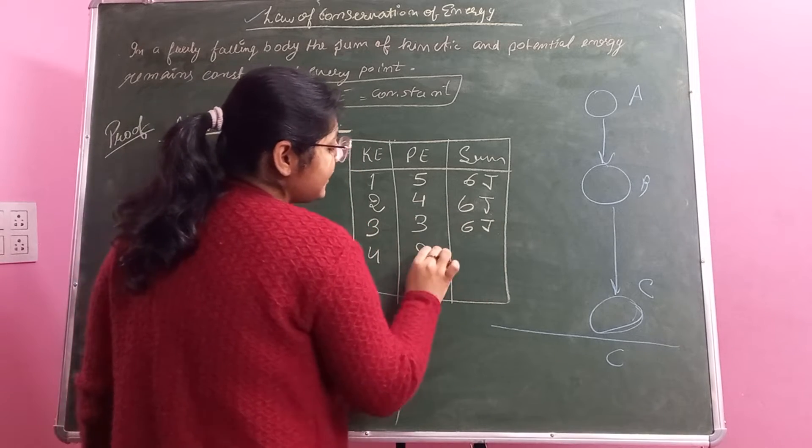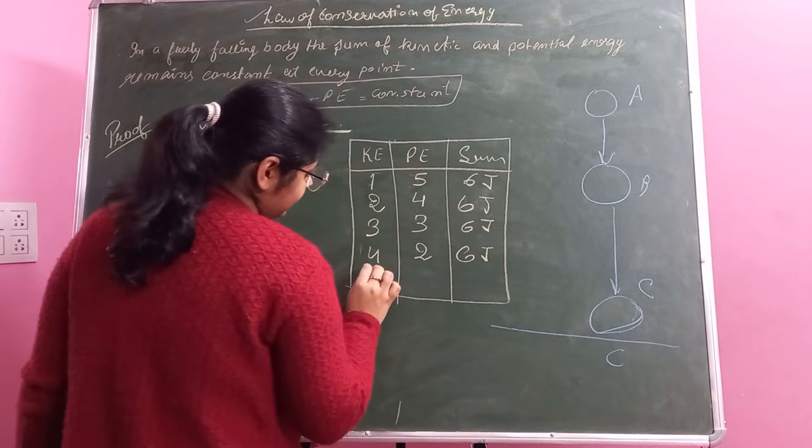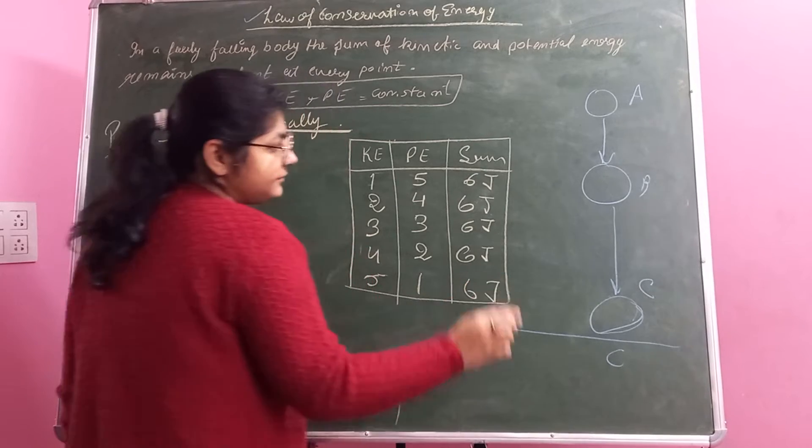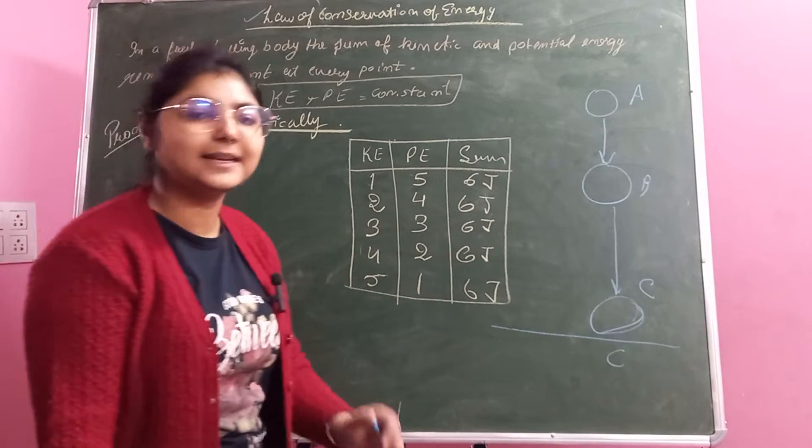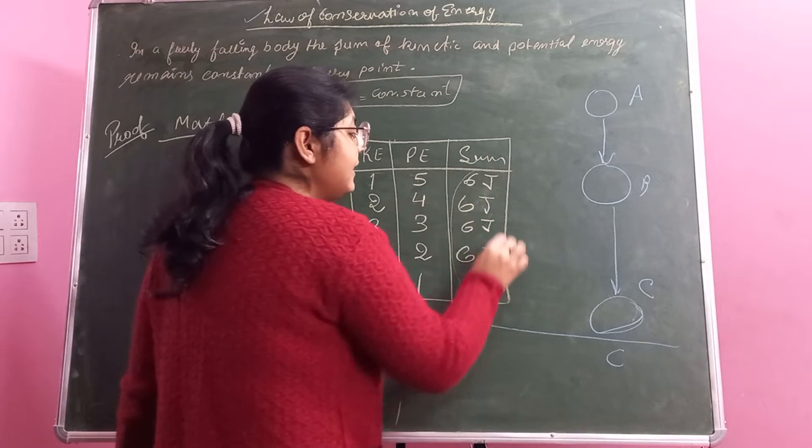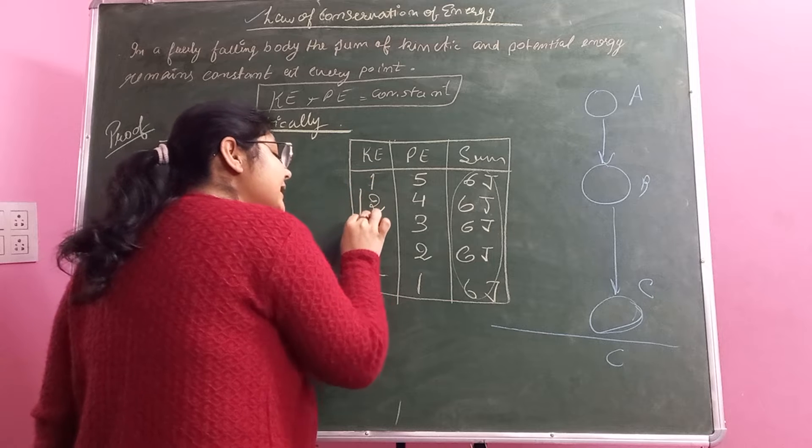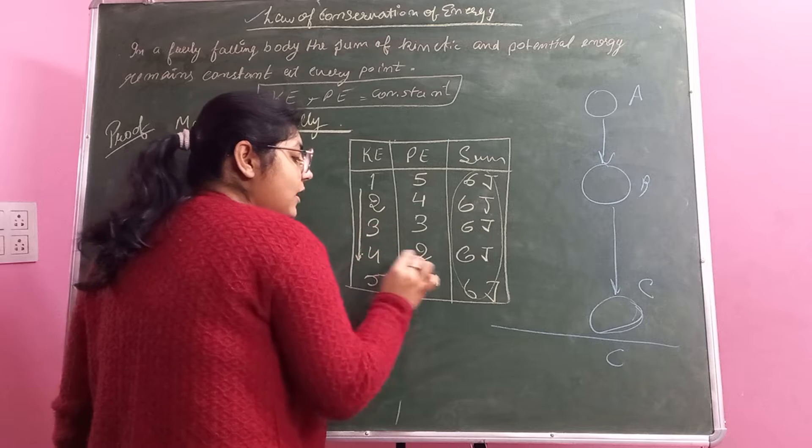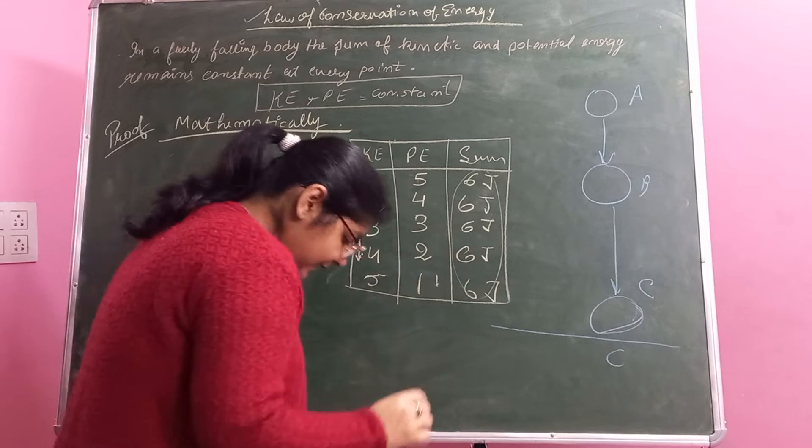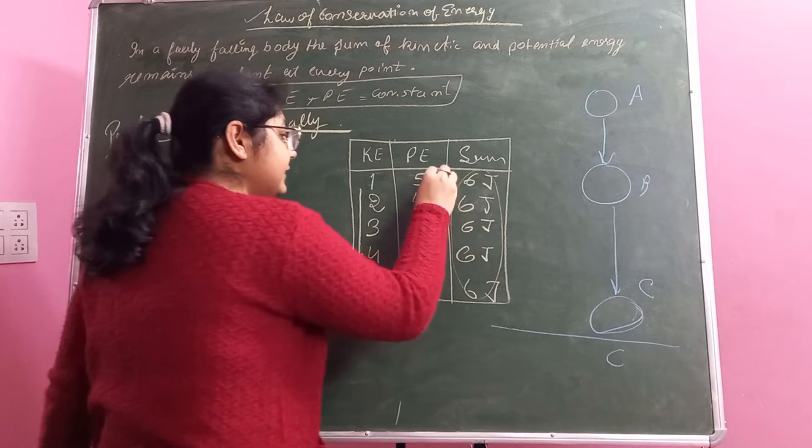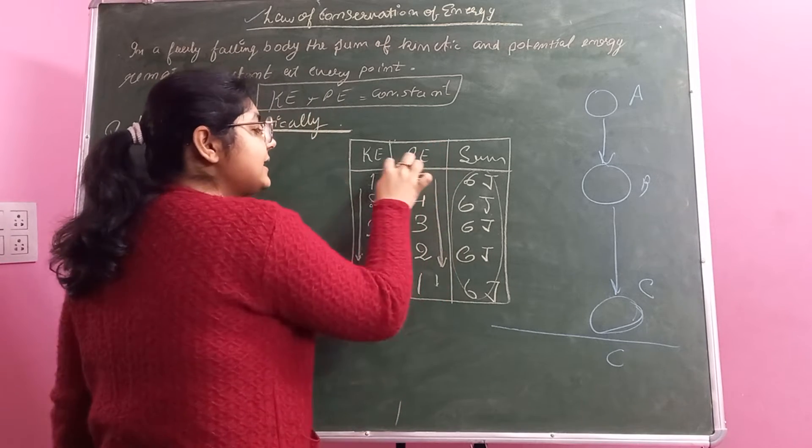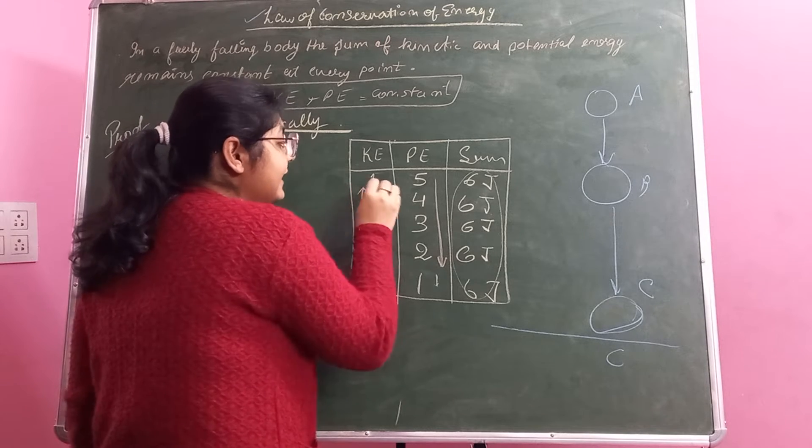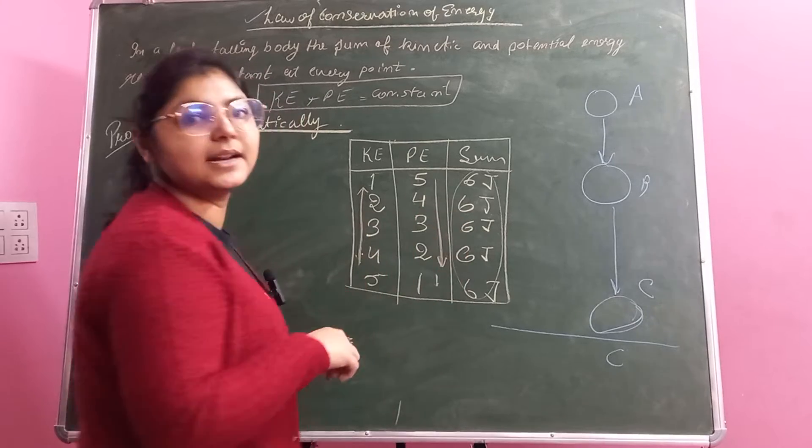The main point is why does this remain constant? Because, as you can see, as potential energy is decreasing, kinetic energy is increasing. As kinetic energy is increasing, potential energy is reducing. Kinetic energy increase, potential energy decrease. This is why when the velocity increases and the height is reduced, potential energy is reducing.